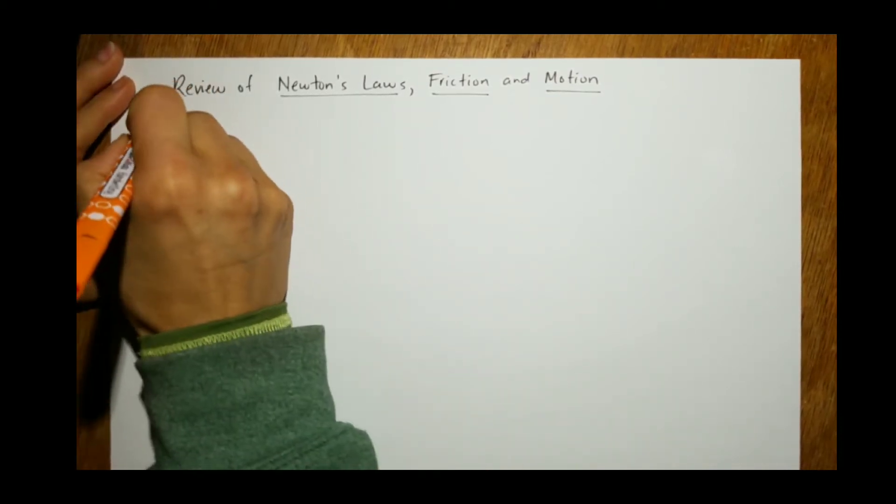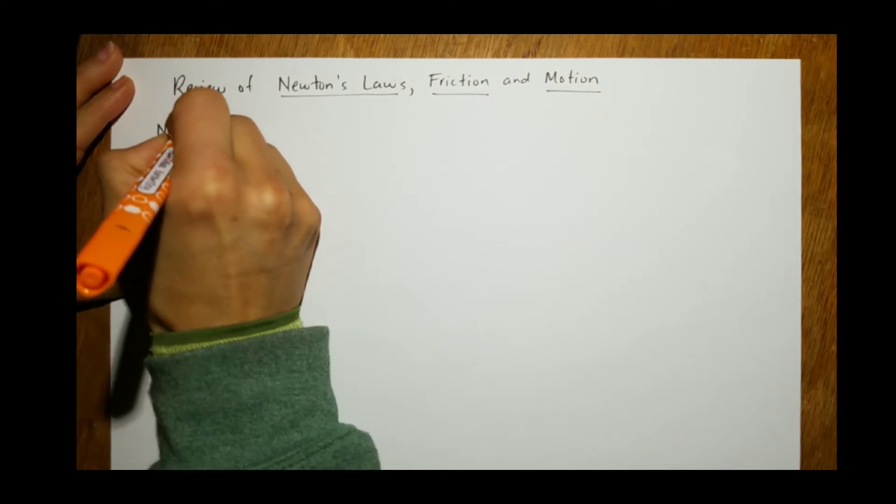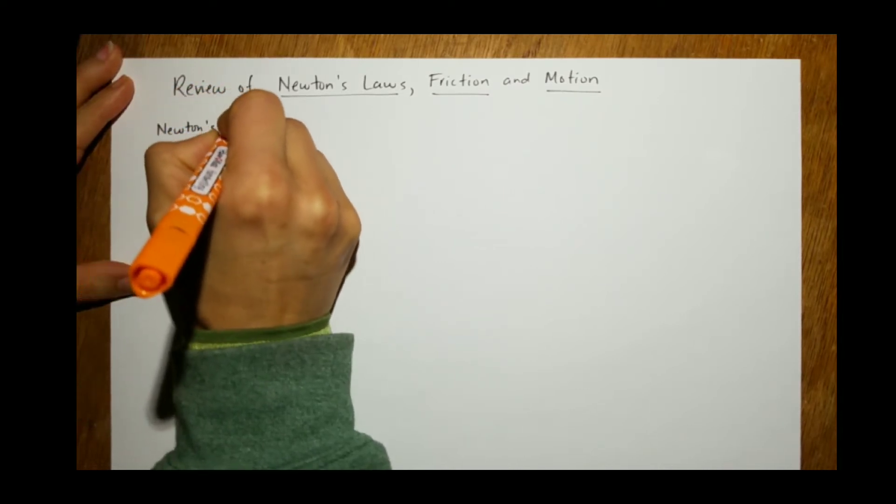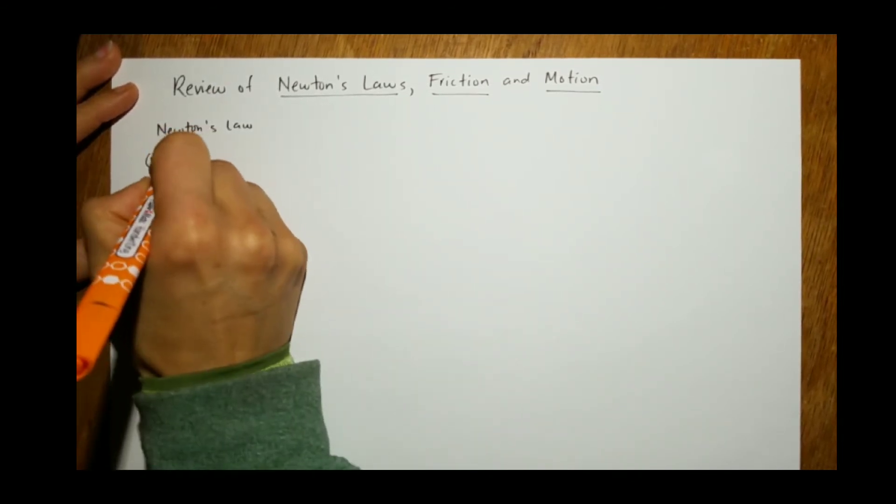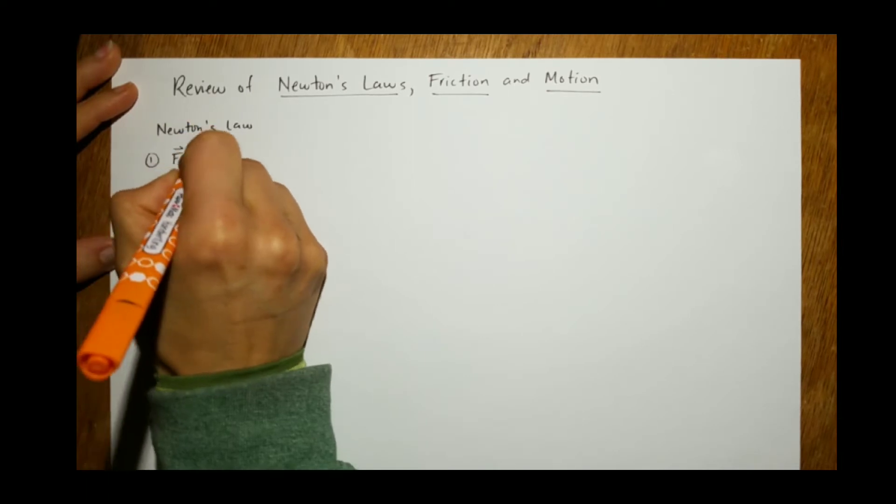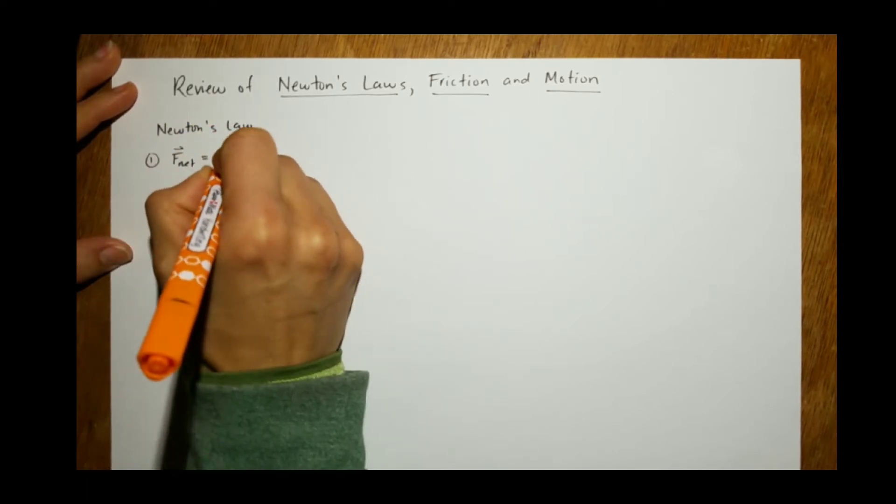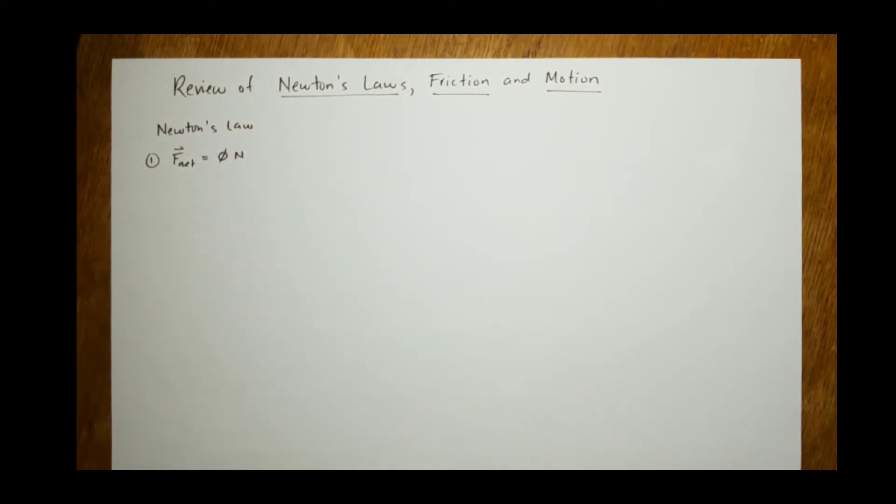So the first thing let's talk about is Newton's Laws. There's three of them. Newton's Laws of Motion, number one has to do when F net equals zero Newtons. That does not mean there's no forces. It means the external forces are balanced.